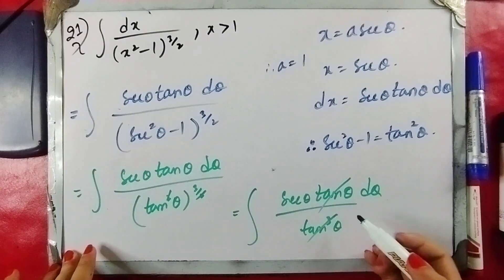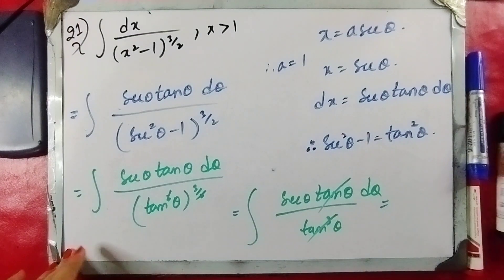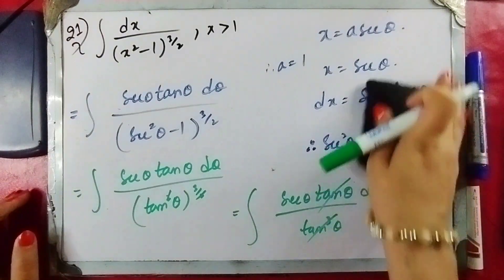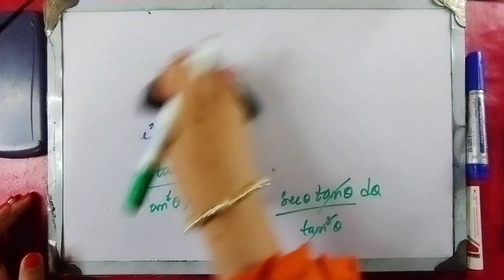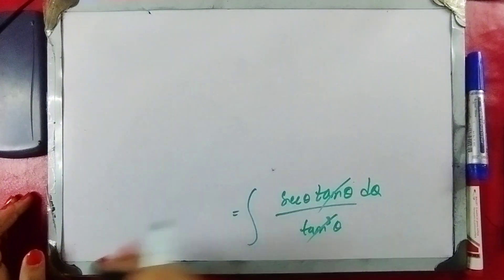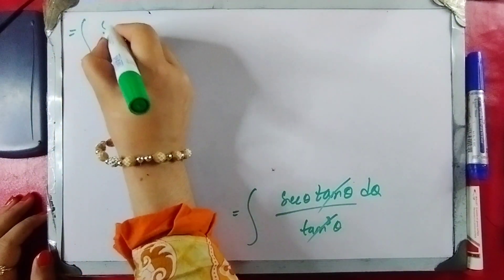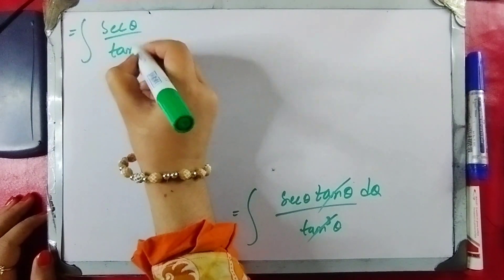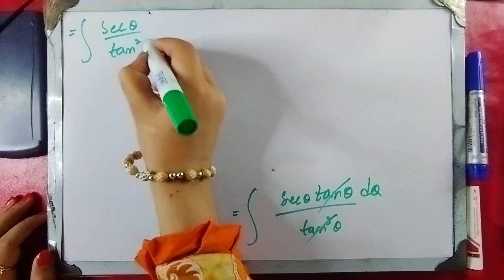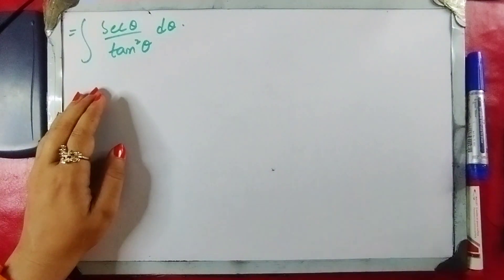So we have secant of theta and the power 3/4 and 3/2 of theta in the simplified expression.